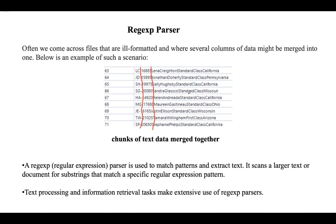We can simply say that the Regex parser is used to match patterns and extract text. It scans a larger text or document for substrings that match a particular regular expression pattern. It is used in applications like text processing and information retrieval tasks.